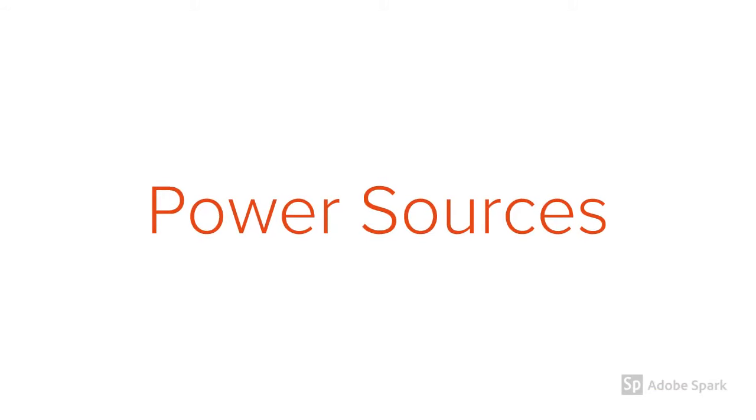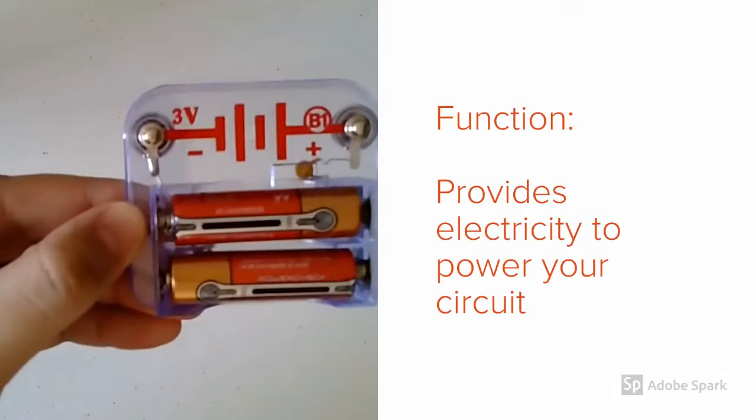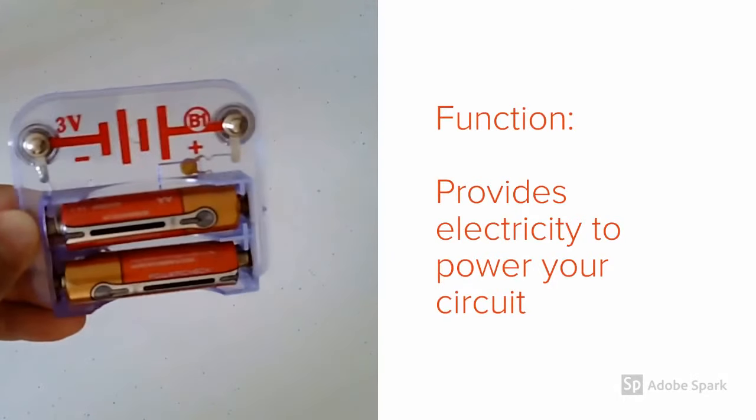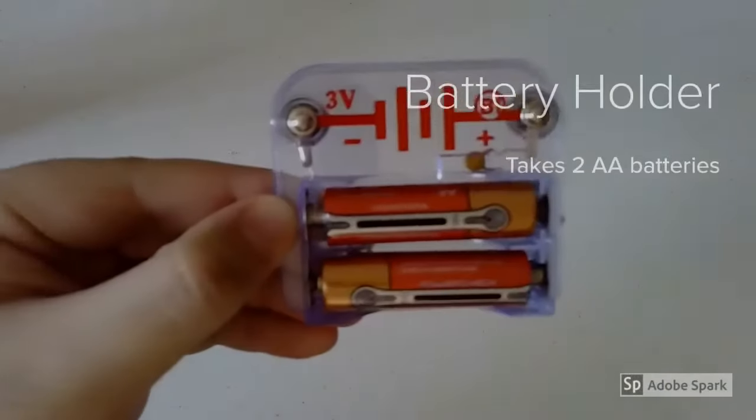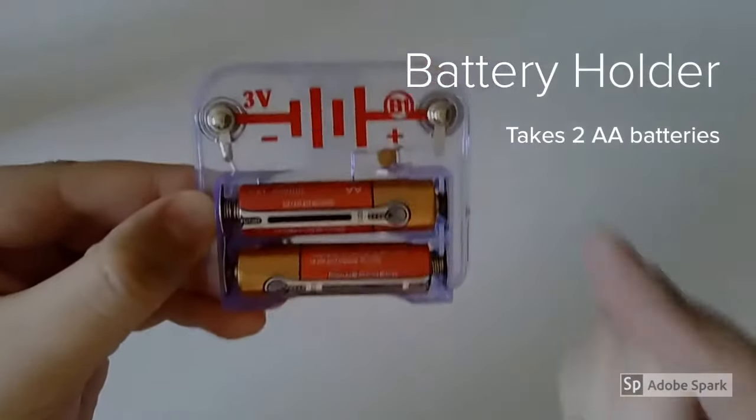Our first category is Power Sources. You can probably tell by the name, but these components will be providing electricity to your circuit. Your Snap Circuits should have one of these, a battery holder. These should be able to take two AA batteries.